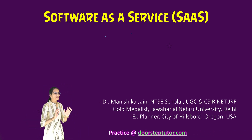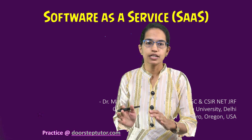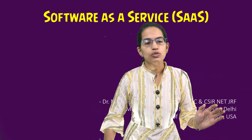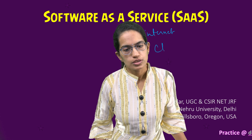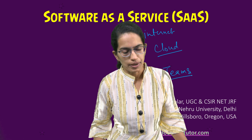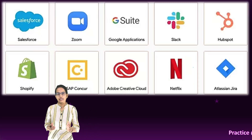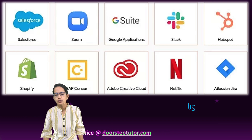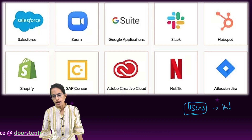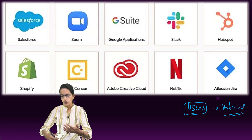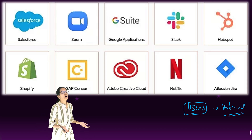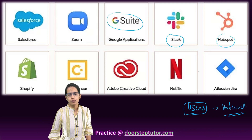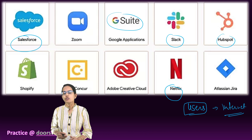Let's say I create a software. If this software I have created, I am not using it for myself but also providing it to others where they could use it as a base — this could be provided over the internet using various cloud services. A good example is Microsoft Teams. It is a software as a service because it is provided to users who can use it over the internet. Some commonly used SaaS include Google Suite, Slack, HubSpot, Netflix, and Salesforce.